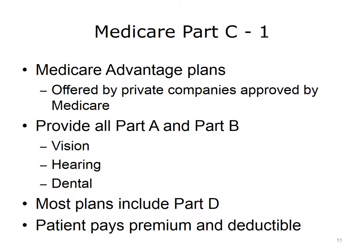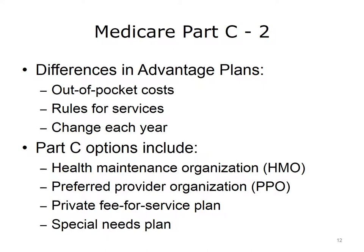Medicare Part C refers to the Medicare Advantage plans, offered by private companies approved by Medicare. These plans provide Medicare Parts A and B and may offer extra coverage such as vision, hearing, and dental care. Most of these plans include Part D, which is prescription drug coverage. Enrollees pay a premium to the private companies and also pay a deductible. Each Medicare Advantage plan charges different out-of-pocket costs and has different rules for services, which can change each year. A Medicare Advantage plan can take the form of a health maintenance organization (HMO), a preferred provider organization (PPO), a private fee-for-service plan, or a special needs plan.